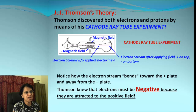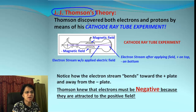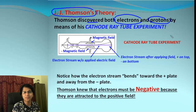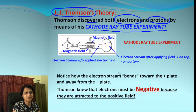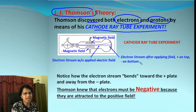The next scientist was J.J. Thomson, who became very popular as the first one to discover electrons. He also said a few things about protons. To prove his findings, he performed the famous cathode ray tube experiment. The experiment involves a magnetic field, positive and negative ends, and shows an electron stream — first without an applied electric field, where electrons go straight, and then with an applied electric field.